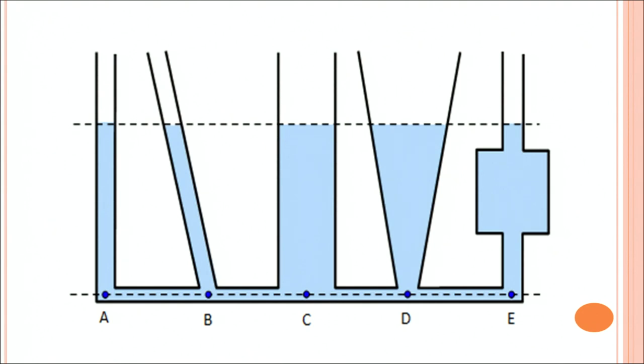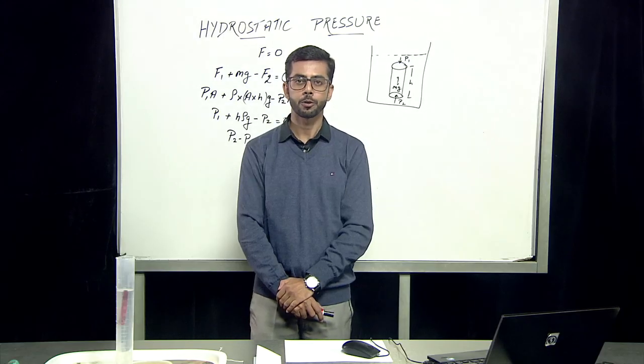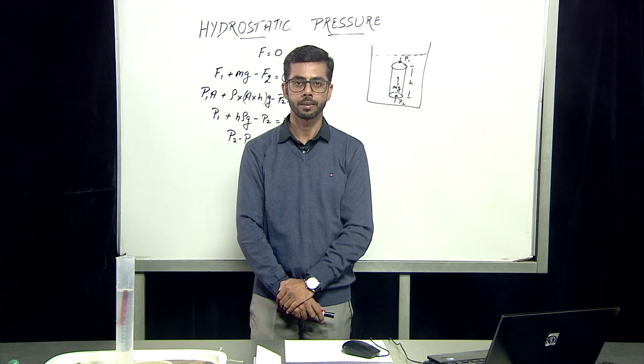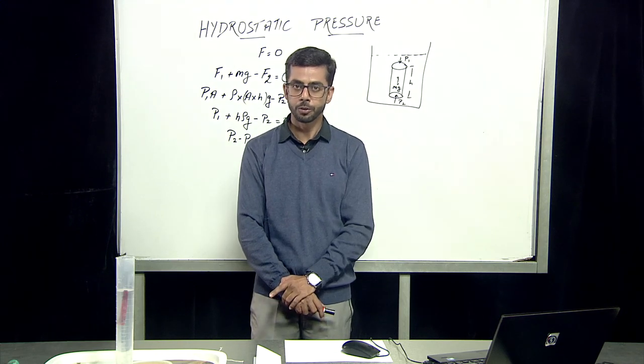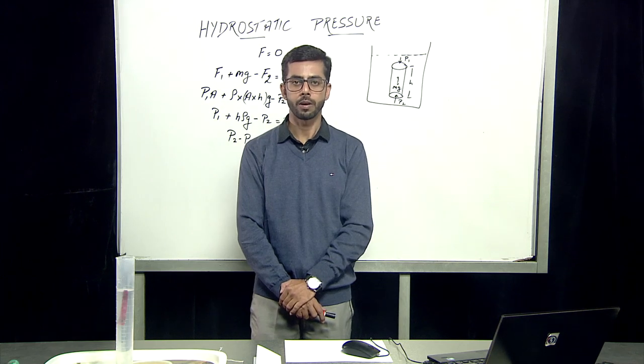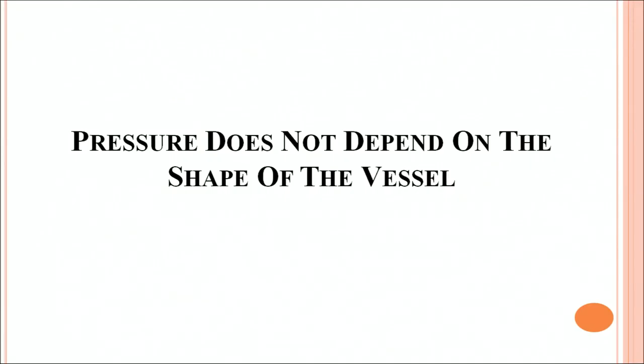Till now, what we had learned? That hydrostatic pressure varies with the height. And it also depends on the lower and the upper surface area of an object. And pressure does not depend on the shape of the vessel. Thank you.